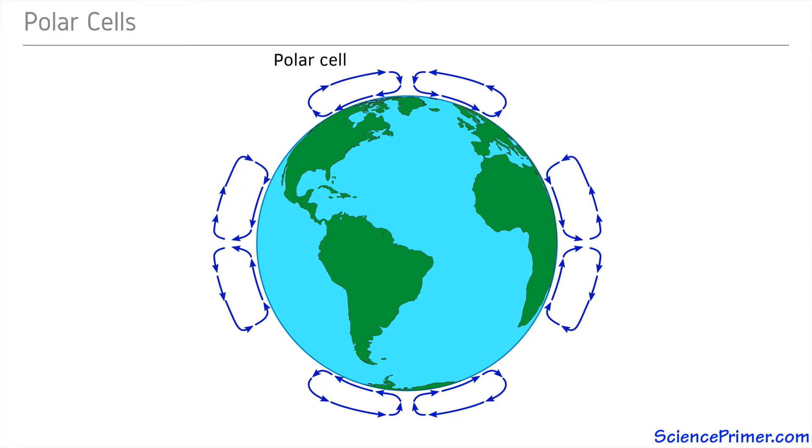This is called the polar cell. A third cell exists between the Hadley and polar cells. Air movement here is driven by air that falls along the edge of the Hadley cells, but then is pushed along the ground away from the equator, and air that rises at the edge of the polar cells that is then pushed back towards the equator. These are called the Ferrell cells after the American meteorologist William Ferrell.